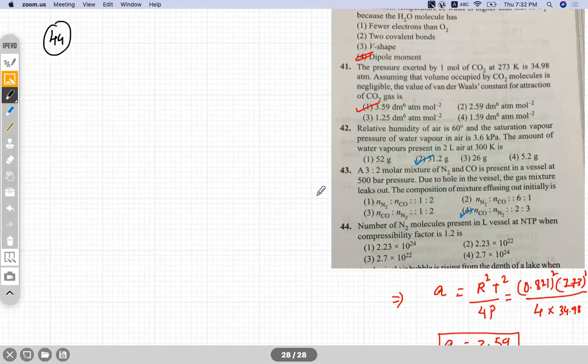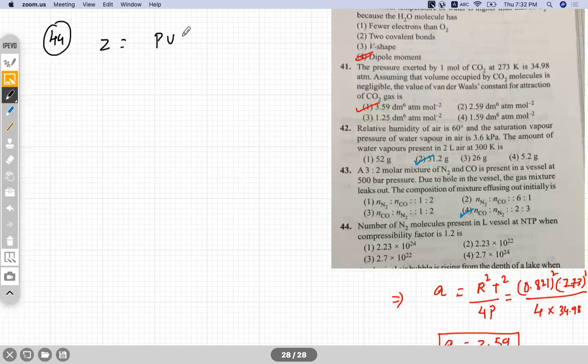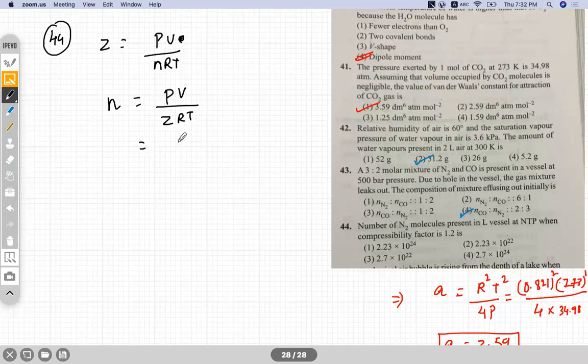Question 44. The number of N2 molecules present in one liter vessel at NTP when the compressibility factor is given. Z value is given. Z equals PV by NRT, so you'll find out number of moles and then you'll get the number of molecules. So number of moles equals PV by Z RT. All the values you'll substitute because everything is given. At NTP the temperature would be 273, so the number of moles you'll get 0.037.